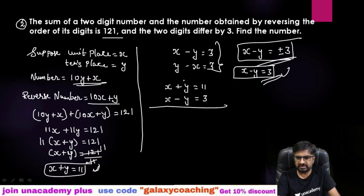If we will add this, this will get cancelled. Here I will get 2x and here I will get 14. So your x will be 14 by 2. x equals 7.